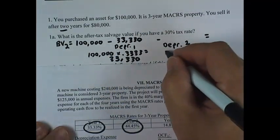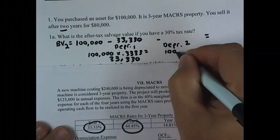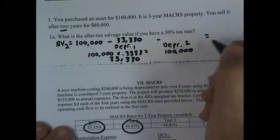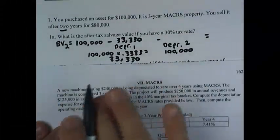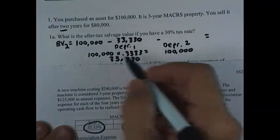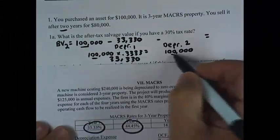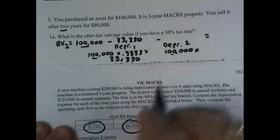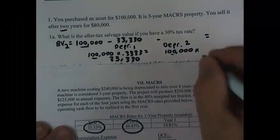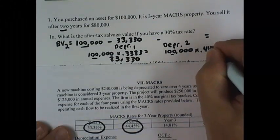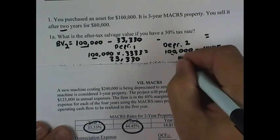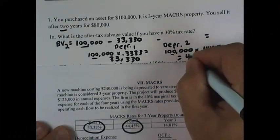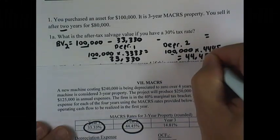Depreciation expense for year two is the $100,000 purchase price, not a declining book value. Go back to that same initial $100,000 purchase price and multiply that by the factor out of the table, 0.4445. So that depreciation expense for year two is $44,450.